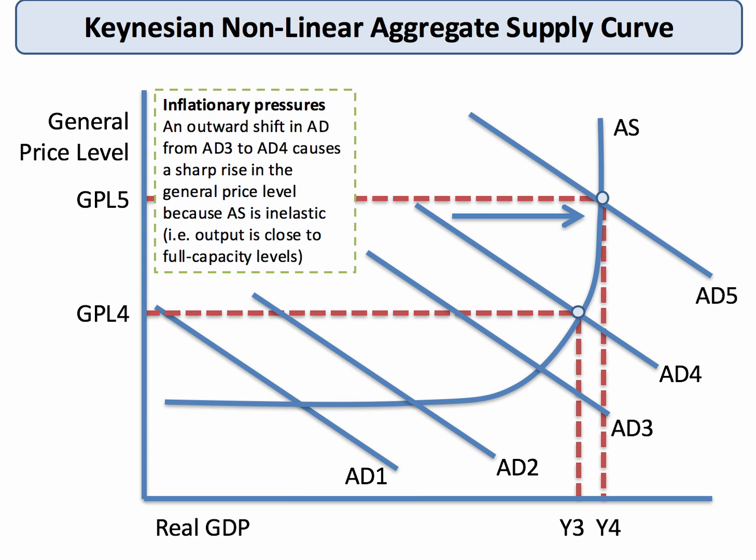For example, an increase in AD from AD3 to AD4, and again from AD4 to AD5. In this situation, we see an increase in the general price level because the aggregate supply curve is now drawn as being inelastic. This is because the economy is getting close to its capacity limits — getting near to its supply side potential.